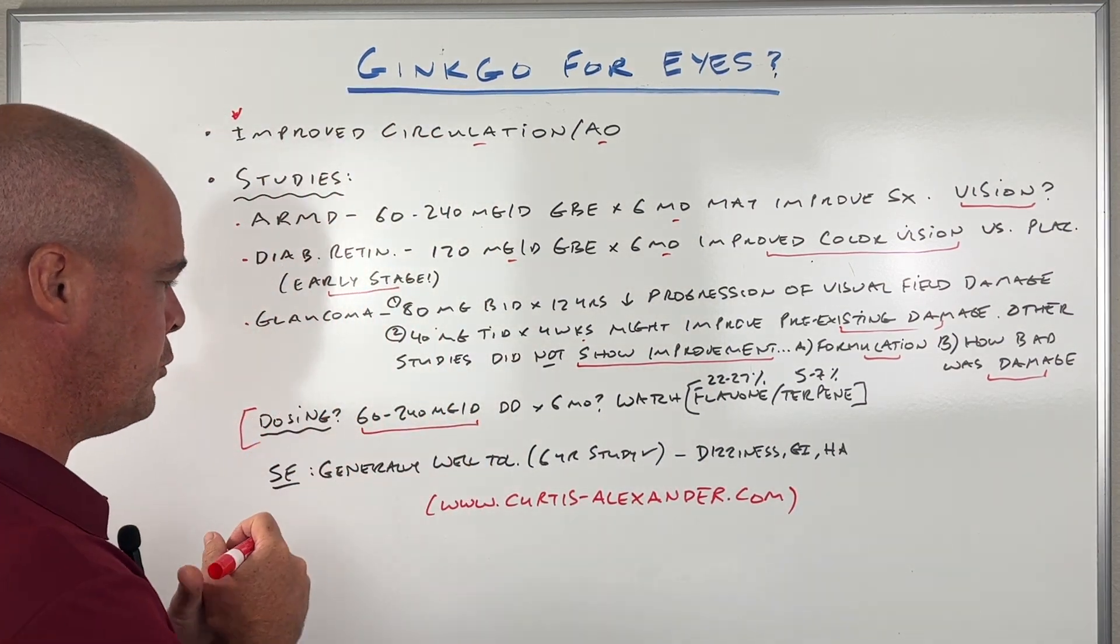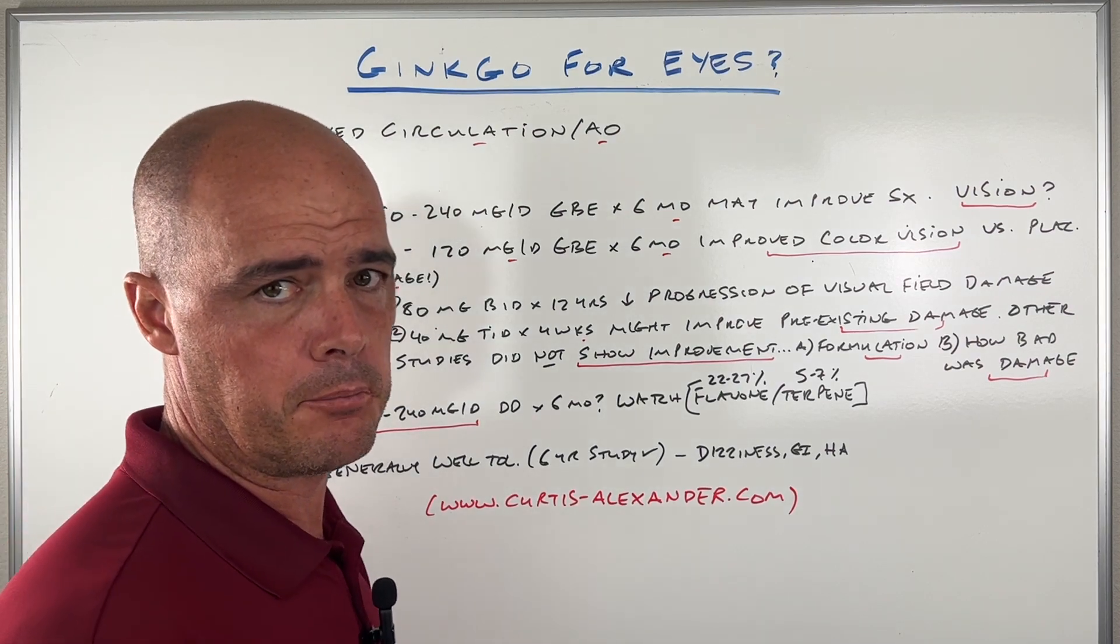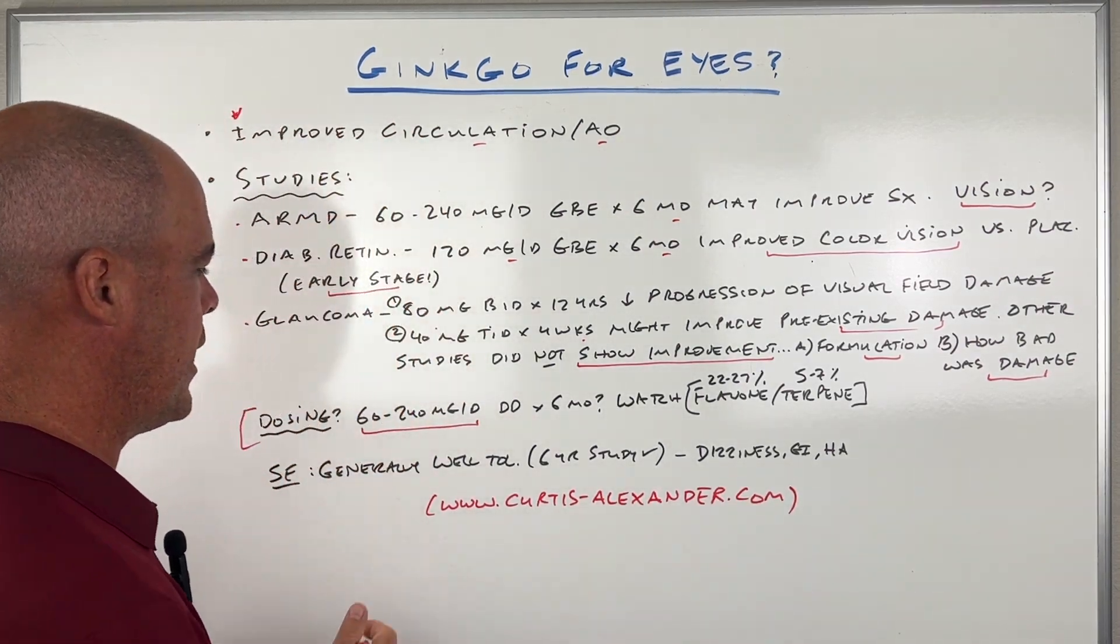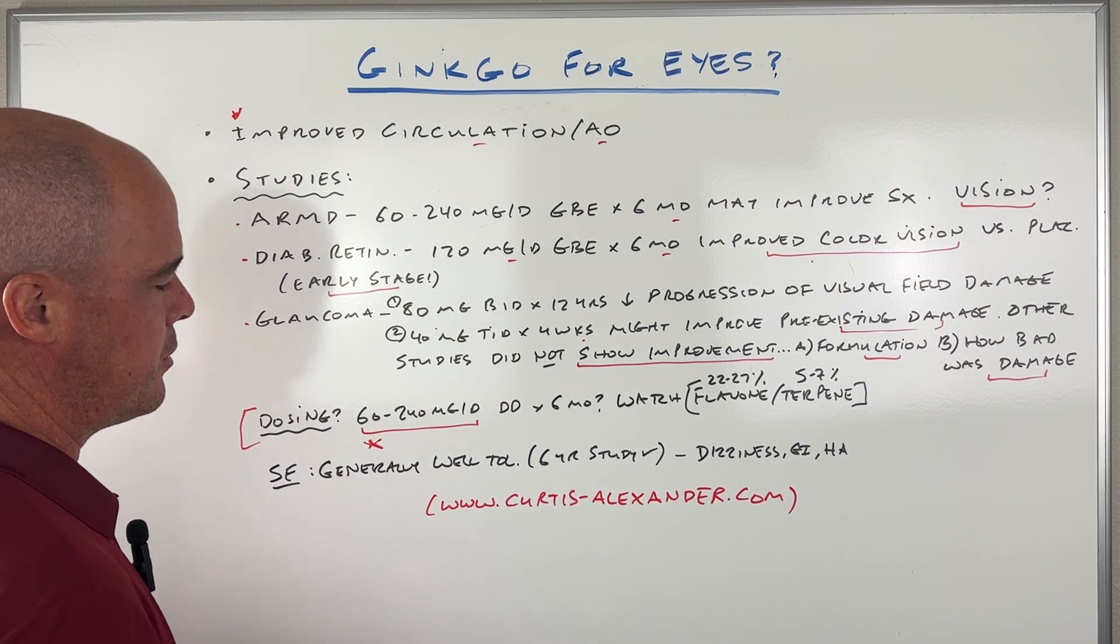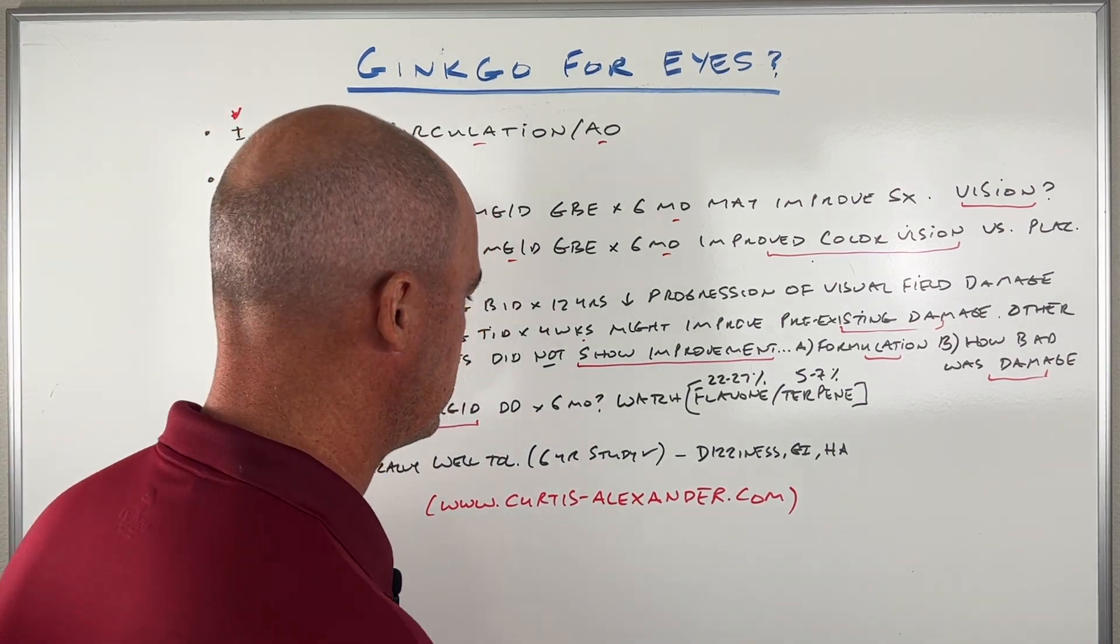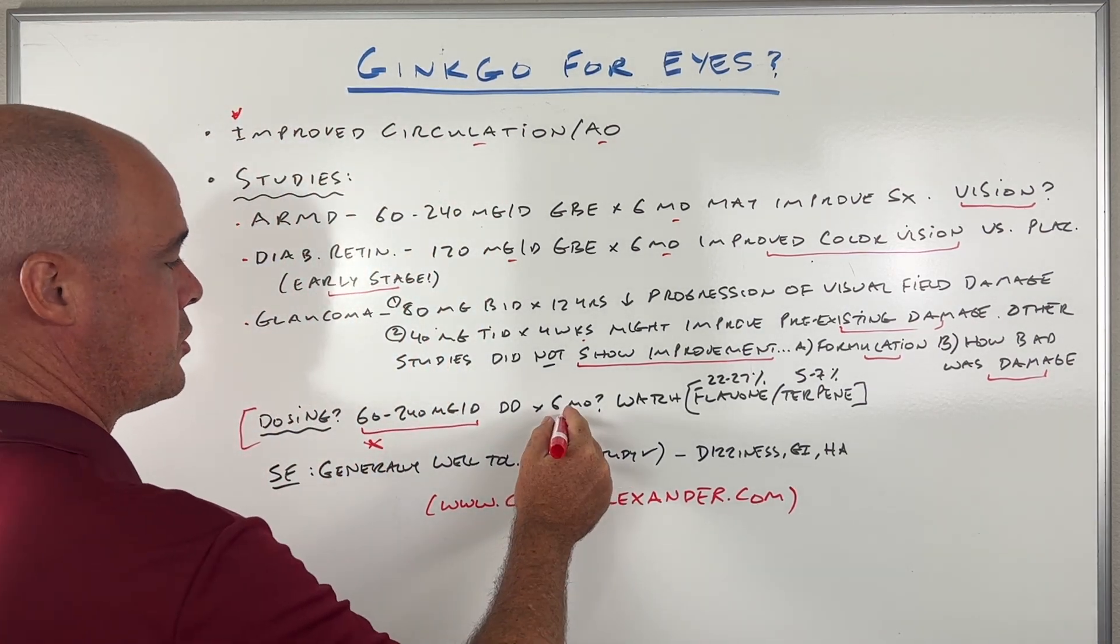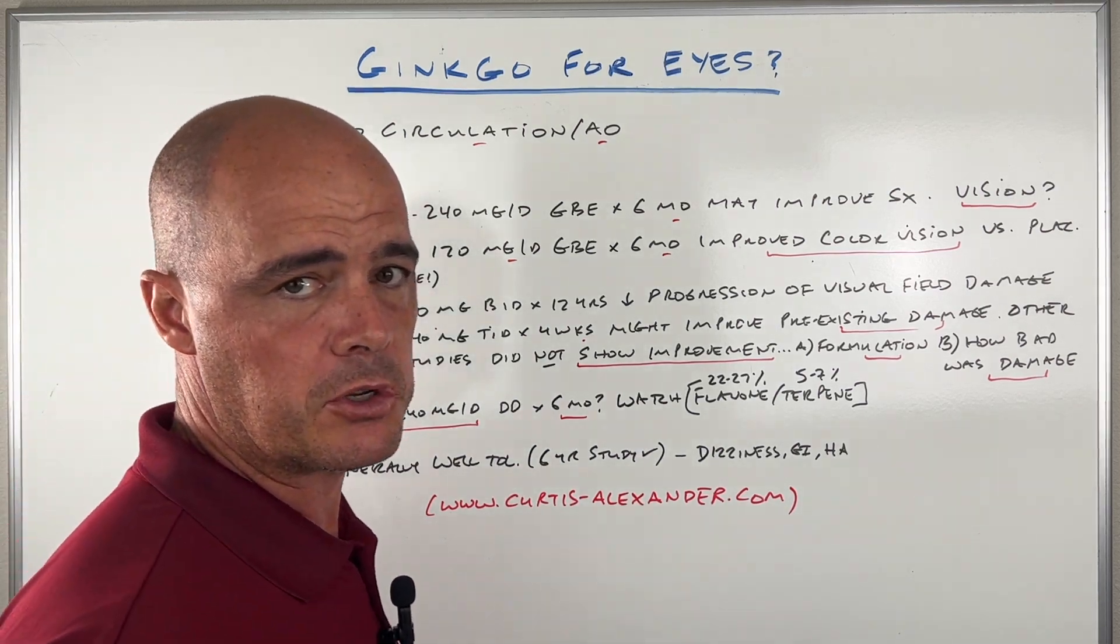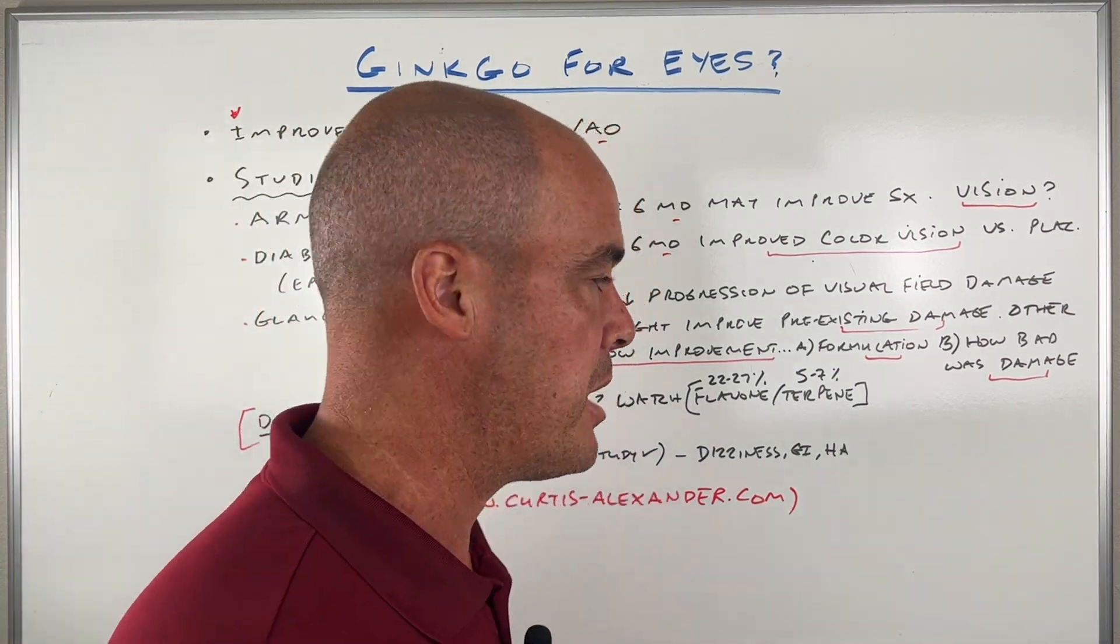I would do these in divided doses anywhere from two to three times a day. So if you're doing 240, maybe 80 milligrams three times a day, that type thing. I would start out at the lower end of the range. We'll talk about side effects in a second. You can do this up for up to six months. It appears to be very safe and just see if you get any benefit.